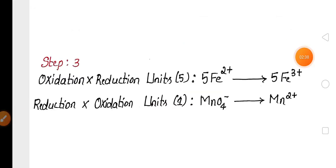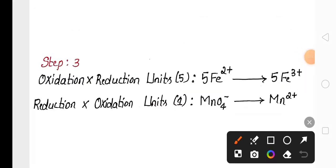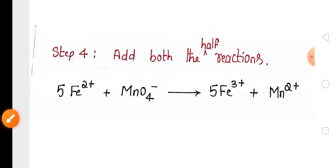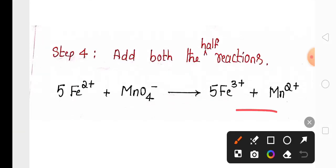After multiplication of both half reactions, we need to add them. Whatever is present on the reactant side is written on the reactant side, and the products on the product side. By adding these reactions, we get the combined reaction.